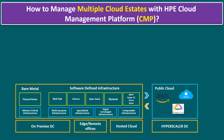The HPE CMP platform is supposed to integrate around 20-plus public cloud platforms, not only limited to those three. It can also manage bare metal environments like physical nodes, mission-critical infrastructure, and software-defined infrastructure. Within software-defined infrastructure we have multi-purpose, specialized, HCI (hyper-converged infrastructure), and composable infrastructure models.